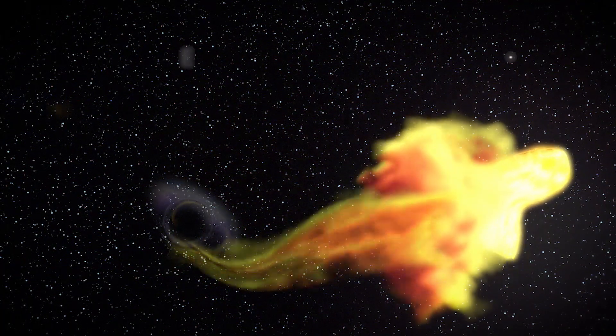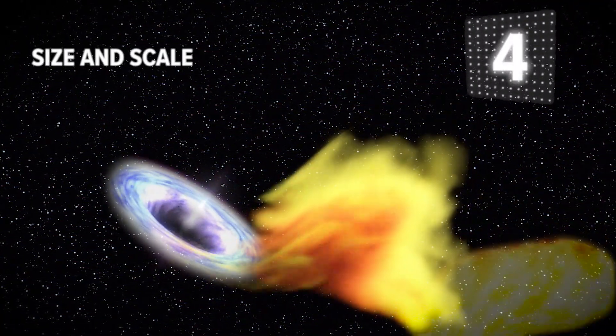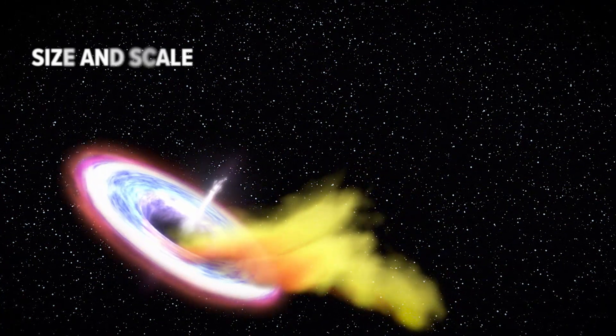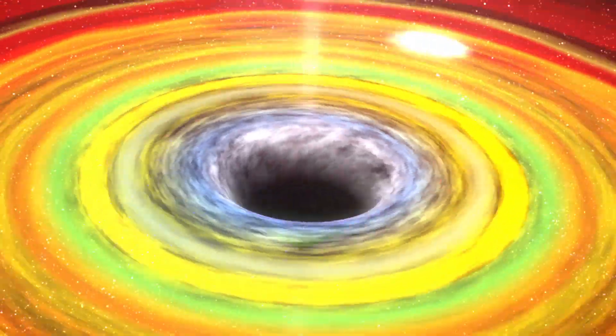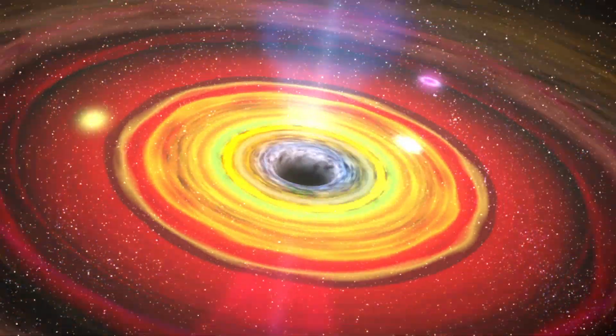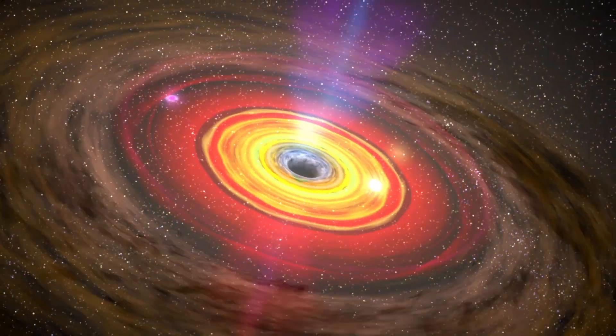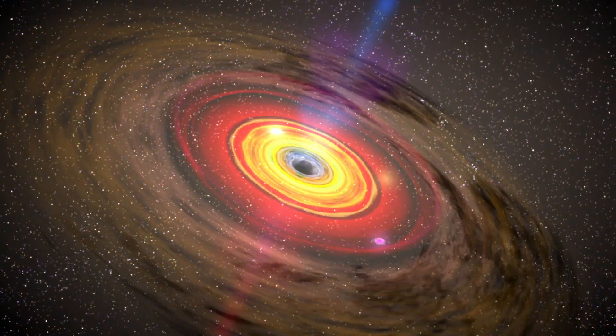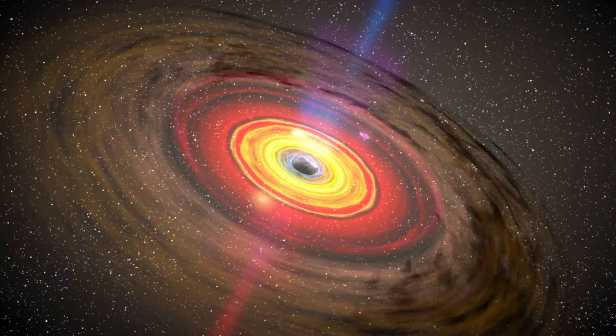Black holes vary in size a lot. We know that black holes can be formed by massive stars exploding and then collapsing into the singular point, and those give us black holes that are about the mass of the sun. So those are solar mass black holes.